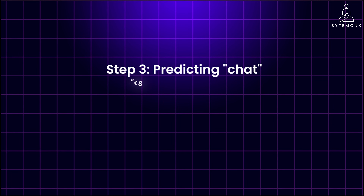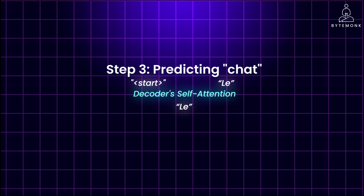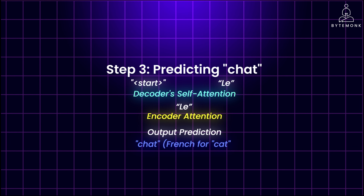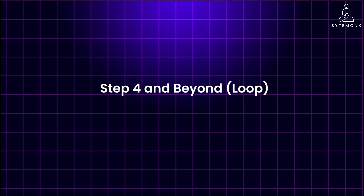While the encoder attention is still heavily focused on understanding the original English sentence, the decoder selects the right French word to match 'animal,' predicting 'chat' — French for 'cat.' In step four and beyond, this process continues with the decoder's input growing from start to 'le,' 'chat,' and so on. The attention shifts as the French translation progresses, focusing on both previous French words and crucial parts of the encoder's English representation, until it outputs a special end token.